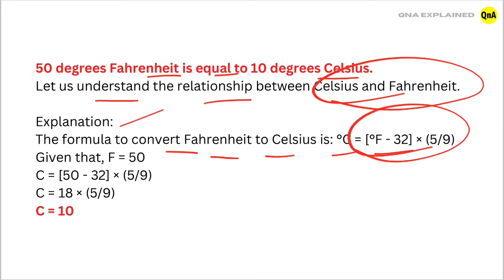Given that Fahrenheit equals 50, Celsius equals 50 minus 32 times 5 upon 9, which is equal to 18 times 5 upon 9.